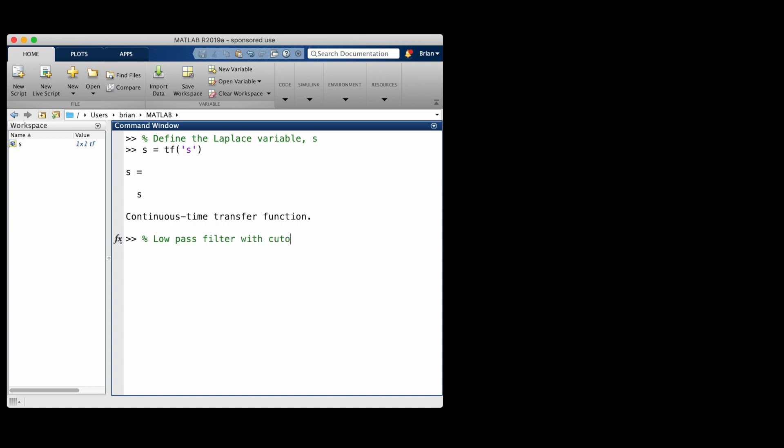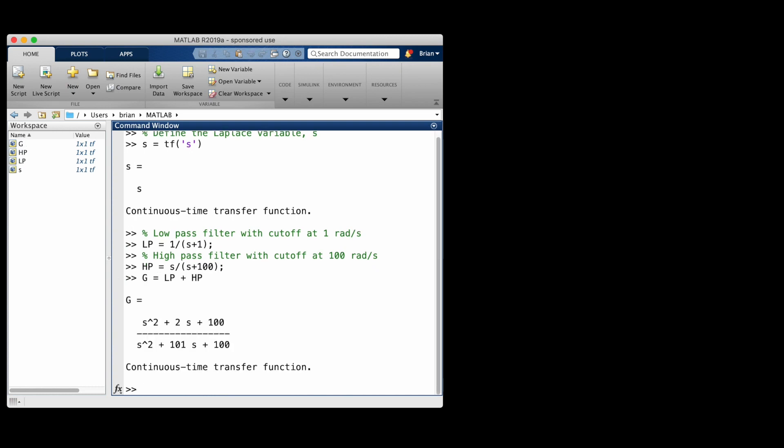I'll build a low-pass filter with cutoff at 1 radian per second, and a high-pass filter with cutoff at 100 radians per second. So the bandstop width would be two decades, from 1 to 100.